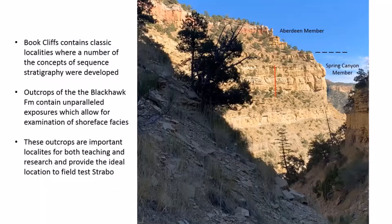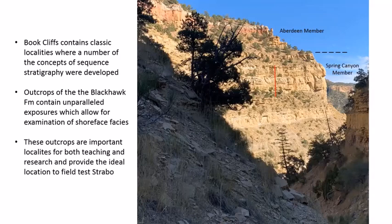The Book Cliffs contain classic localities where many concepts of sequence stratigraphy were developed. Outcrops in the Blackhawk Formation are spectacular, with unparalleled exposures for examining shoreface facies. They are important for both teaching and research, and provided an ideal location to field test StraboSpot.